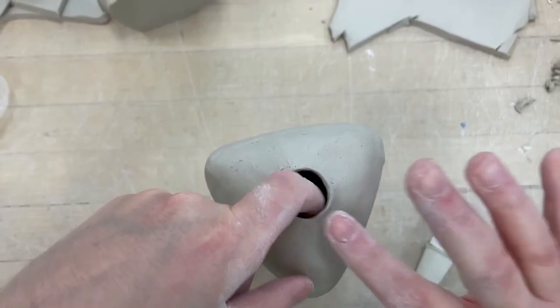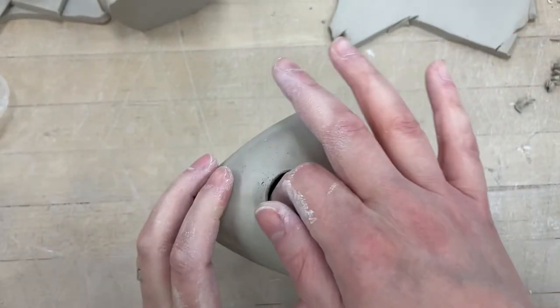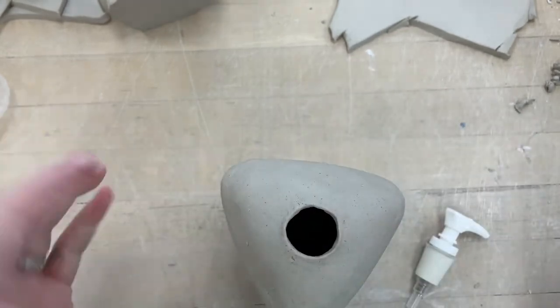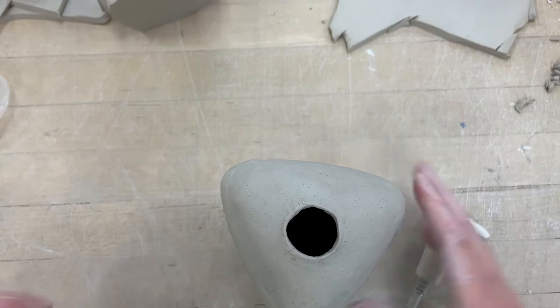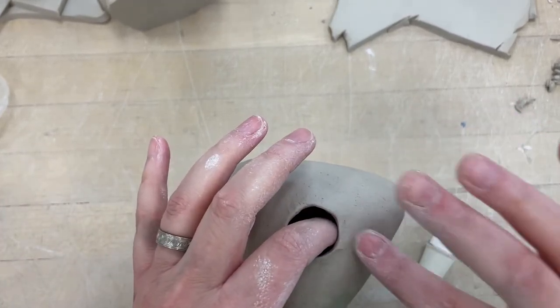Don't make it any bigger than that, because if you make it too big and it doesn't shrink enough, then it's going to fall in, and then you can't use it as a soap pump. I mean, you'd have a beautiful vase, but if you weren't going for a vase, we want to avoid that.